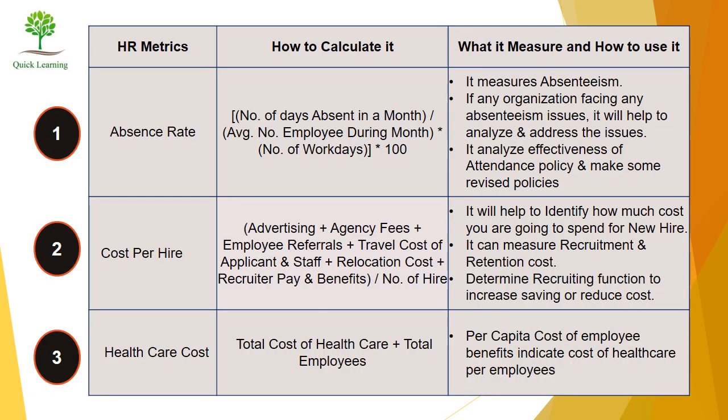We will briefly discuss 12 ways to measure HR performance. First, Absence Rate. This formula is: (number of days absent in a month) divided by (average number of employees during the month multiplied by number of work days), expressed as a percentage. It measures absenteeism and helps to analyze and address attendance issues. Also, it analyzes the effectiveness of attendance policy and if required, helps to make revised policies as well.